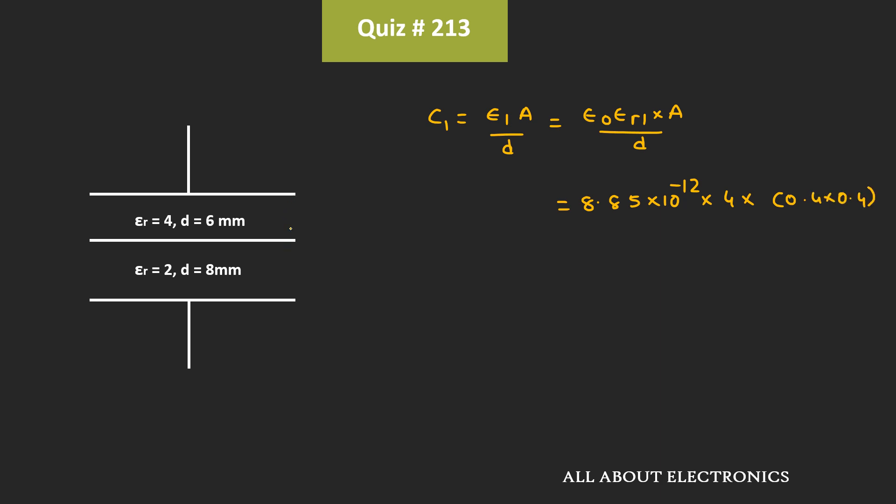And the thickness of this first dielectric is equal to 6 mm. That means in the denominator we will have 6 into 10 to the power minus 3. So if we calculate the value, then this C1 will come out as 944 pF.